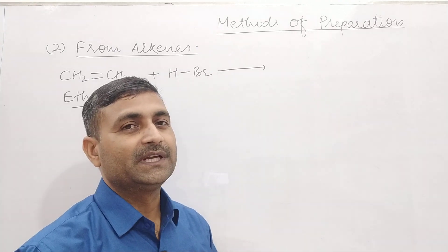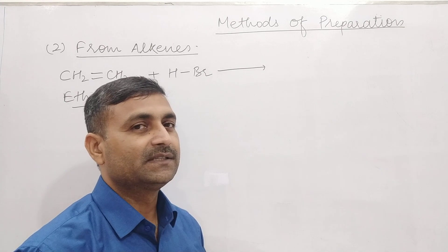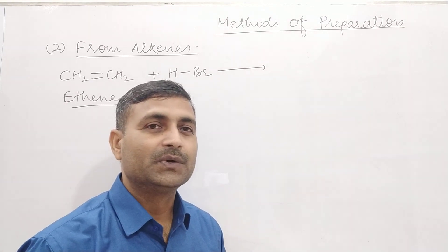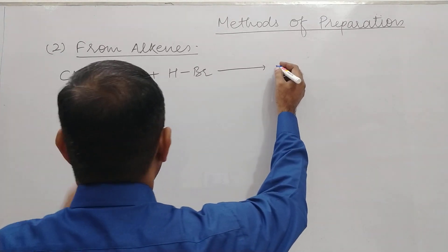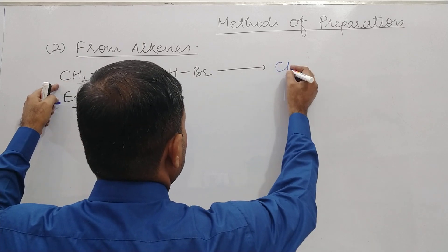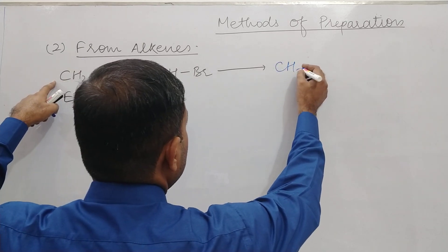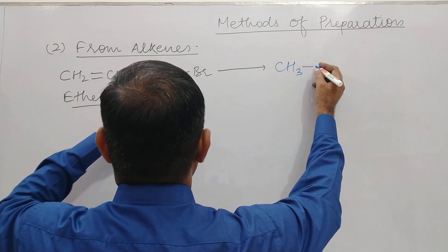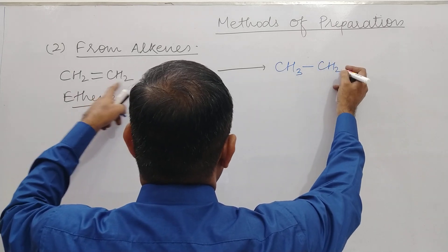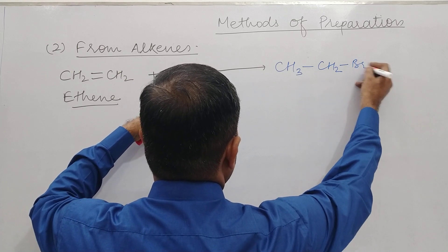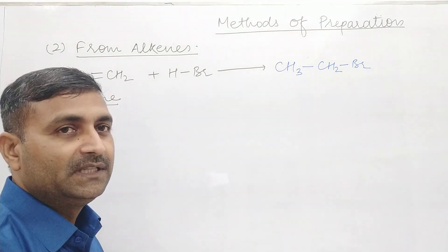Alkenes show addition reactions. Here we have written CH2. Now we add one hydrogen to it — it becomes CH3. And apart from that, with CH2 we attach Br. This product is called 1-bromoethane.